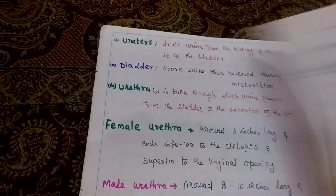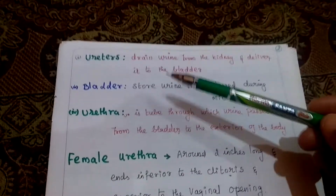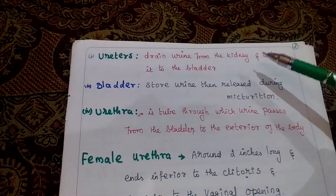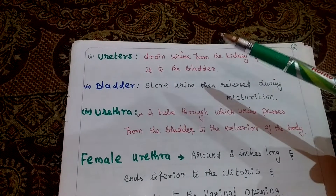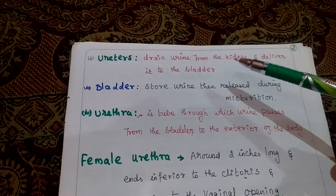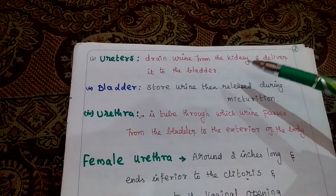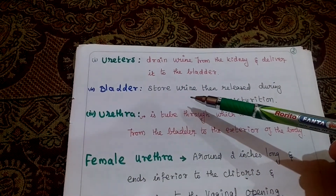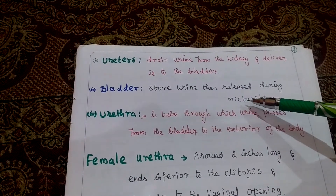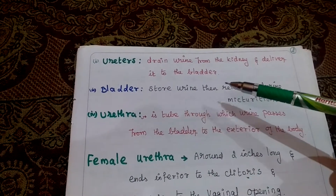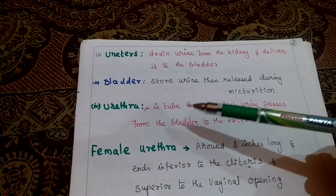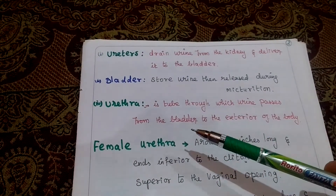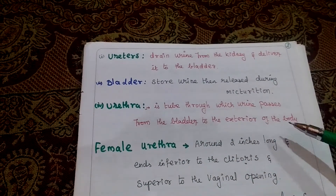The second part is the ureter. The role of the ureter is to drain urine from the kidney and deliver it into the bladder. The role of the bladder is to store urine, and it will pass urine only when we have the urge to urinate.